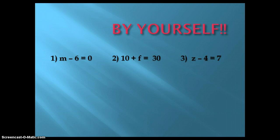Now, by yourself. First problem, M minus 6 equals 0. 2, 10 plus F equals 30. In 3, Z minus 4 equals 7. I will give you some time to figure them out.